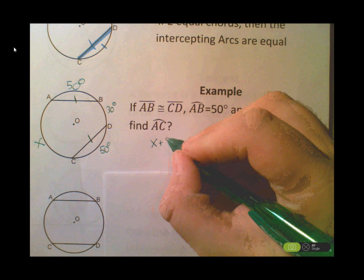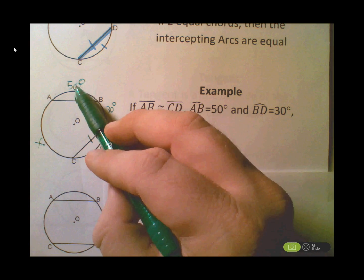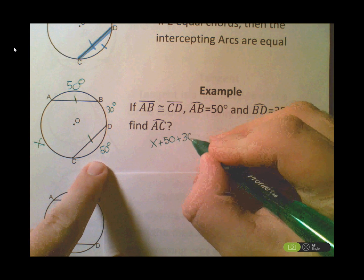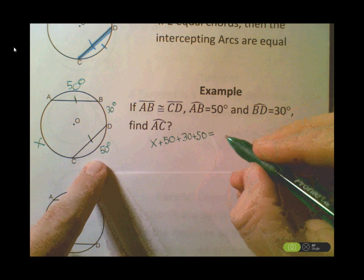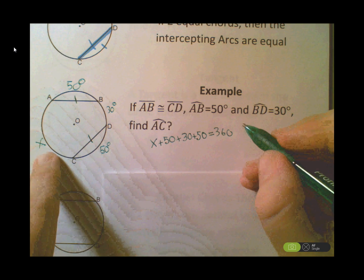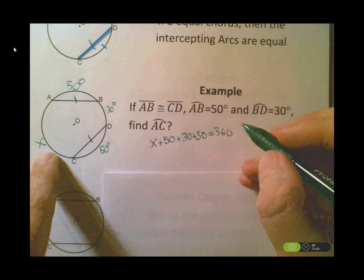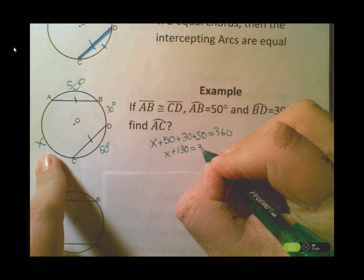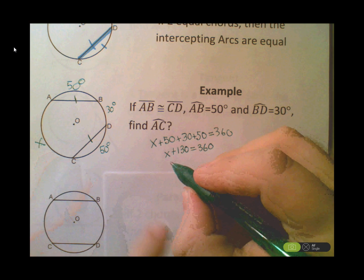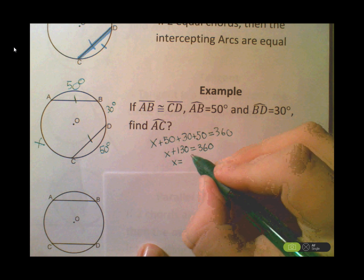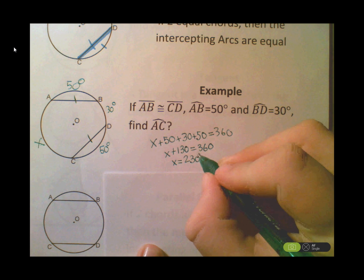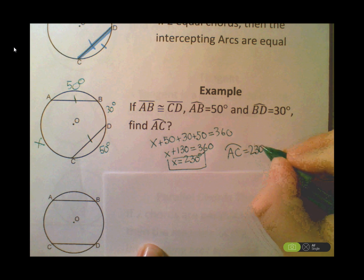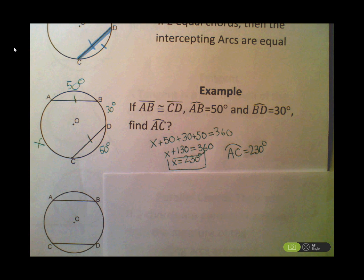A circle has 360 degrees, so we take all four arcs and add them together, setting the sum equal to 360 degrees. We know three of them, so the leftover is x. Combining like terms: x + 130 degrees = 360 degrees, so x = 230 degrees. Therefore arc AC is equal to 230 degrees.